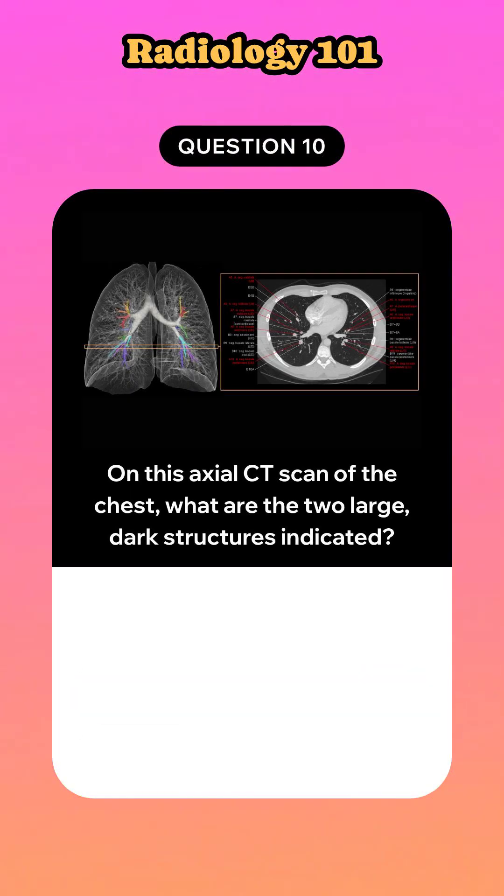On this axial CT scan of the chest, what are the two large dark structures indicated?